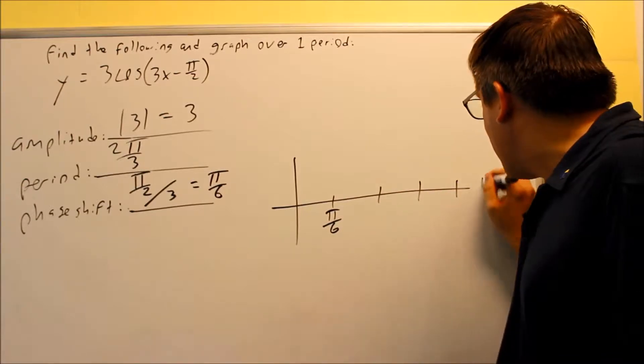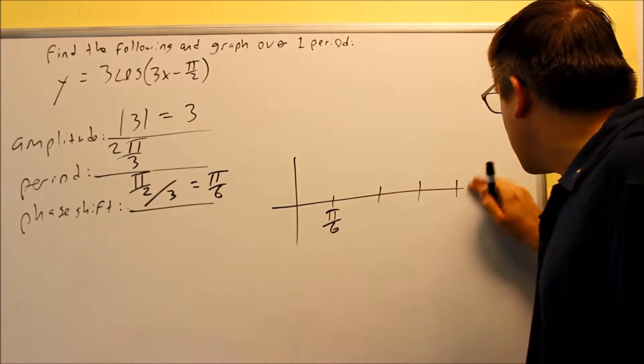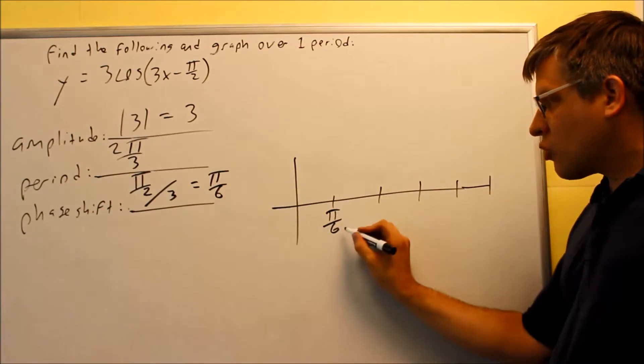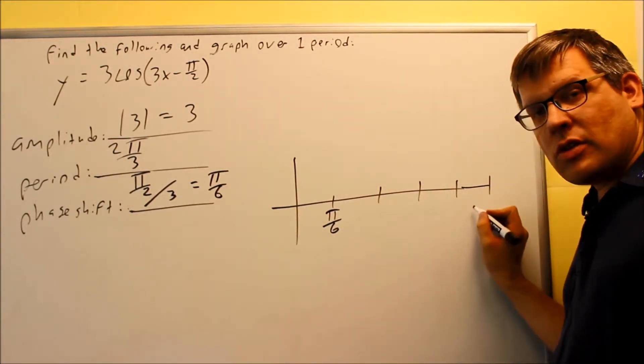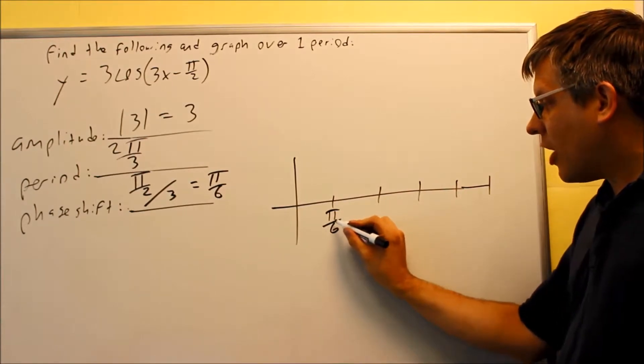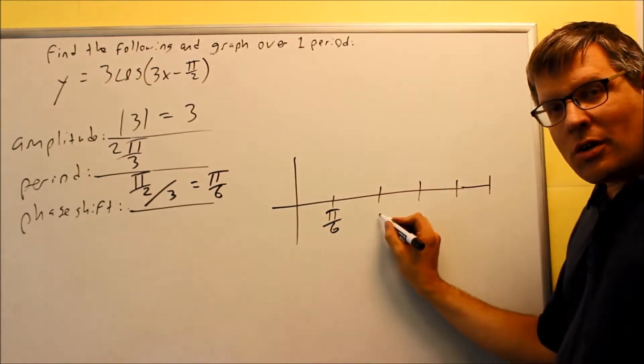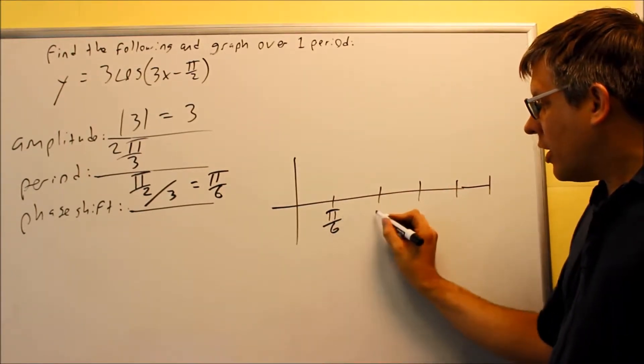From that point, I want to find the other key points that I have here. So here's the first one. Your phase shift will always be the first one on your graph. But I've got to find the other ones. I need to find out how far it is from here to here. So this point right here is your quarter point.